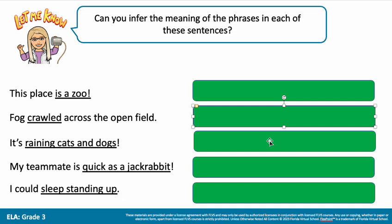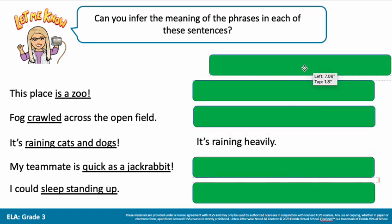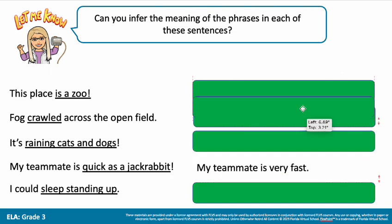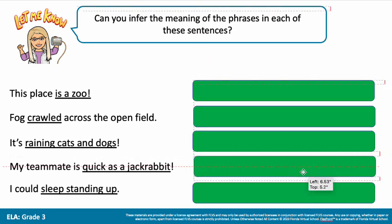Next: 'it's raining cats and dogs.' I've never looked outside and had cats and dogs actually raining down. So when I hear that phrase, I know it's not literally raining cats and dogs — it just means it's raining really hard or heavily. Next: 'my teammate is as quick as a jackrabbit.' If they are as quick as a jackrabbit, they have to be exceptionally fast because rabbits are fast. So the teammate is very fast.